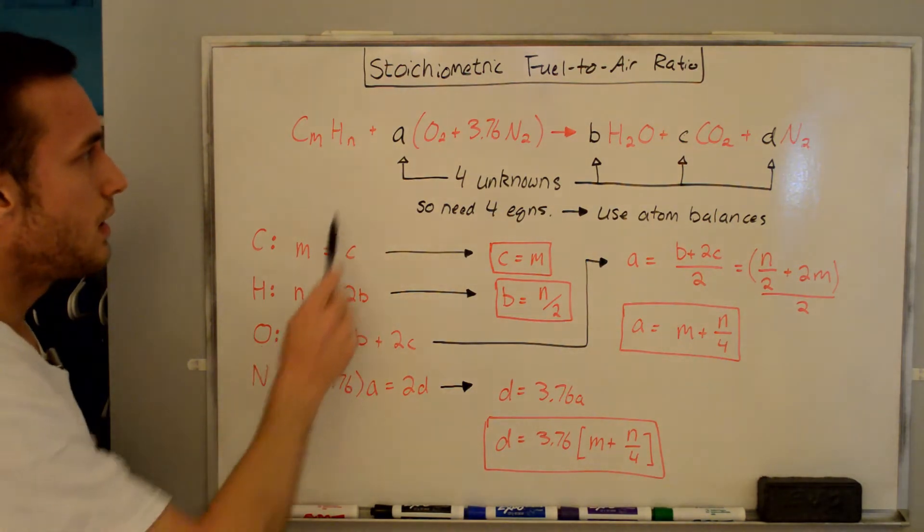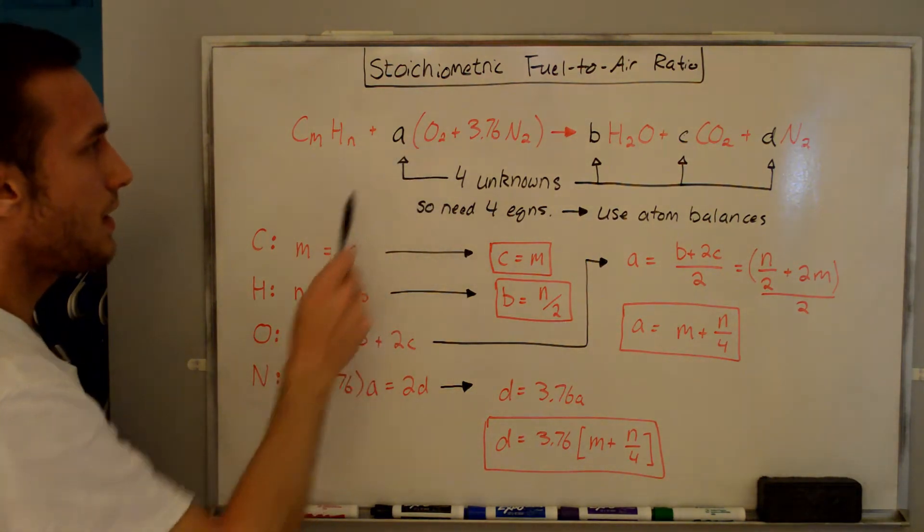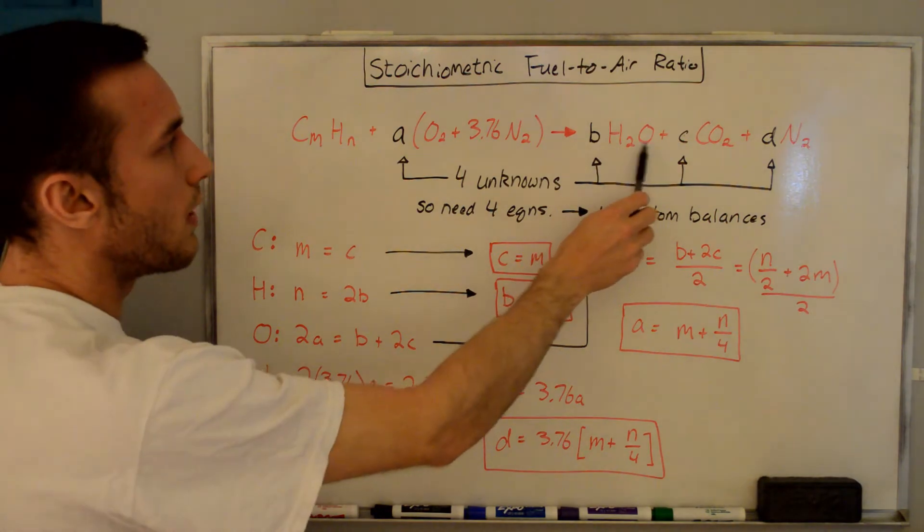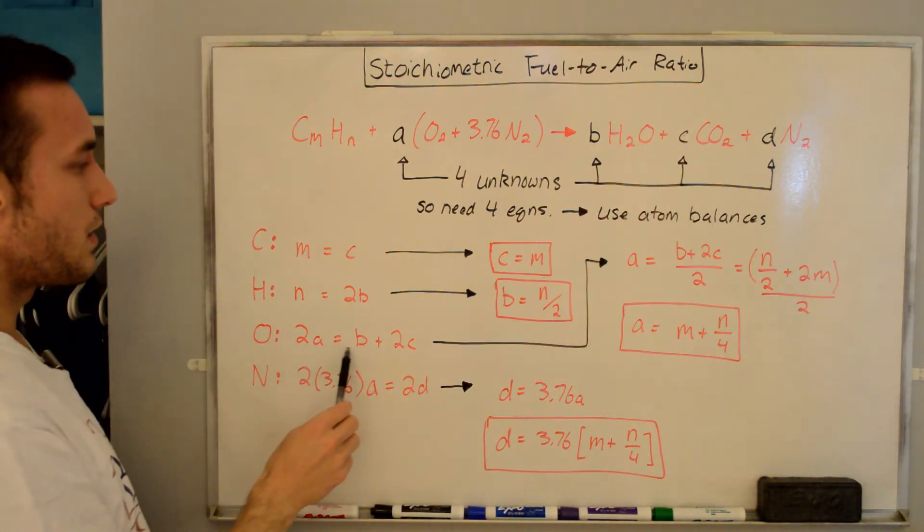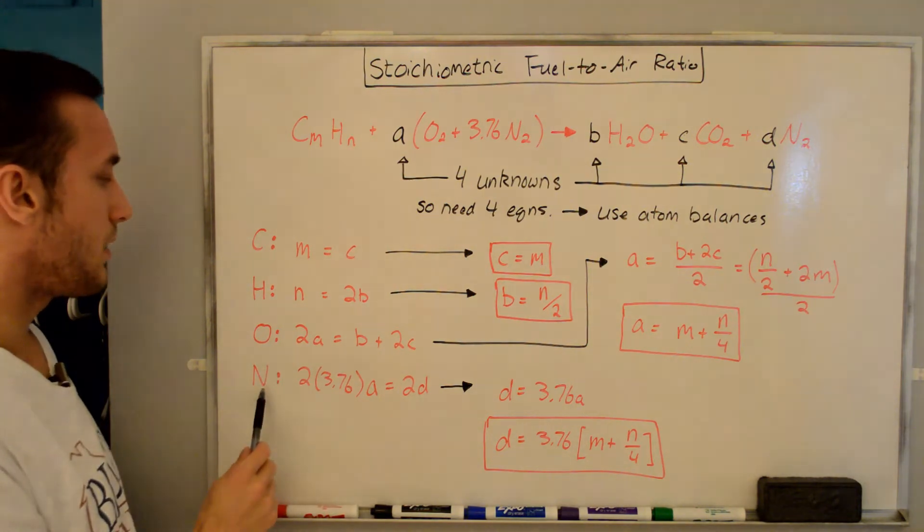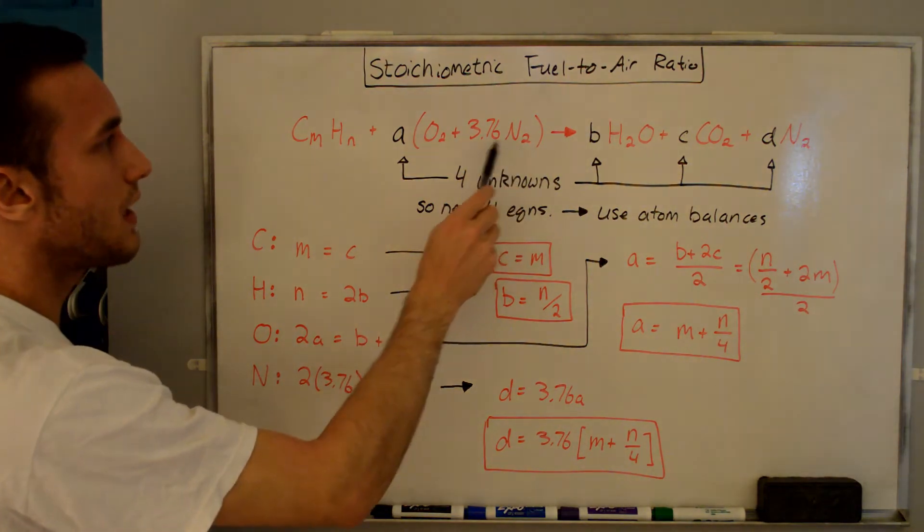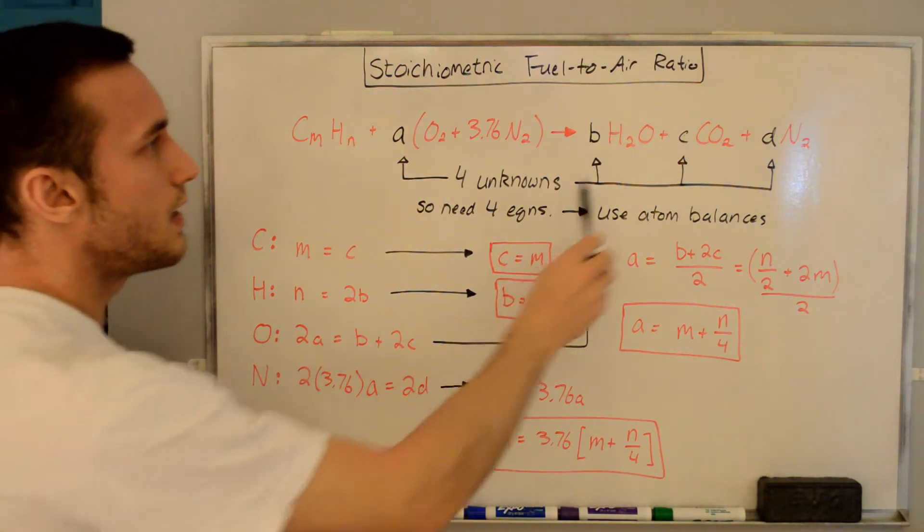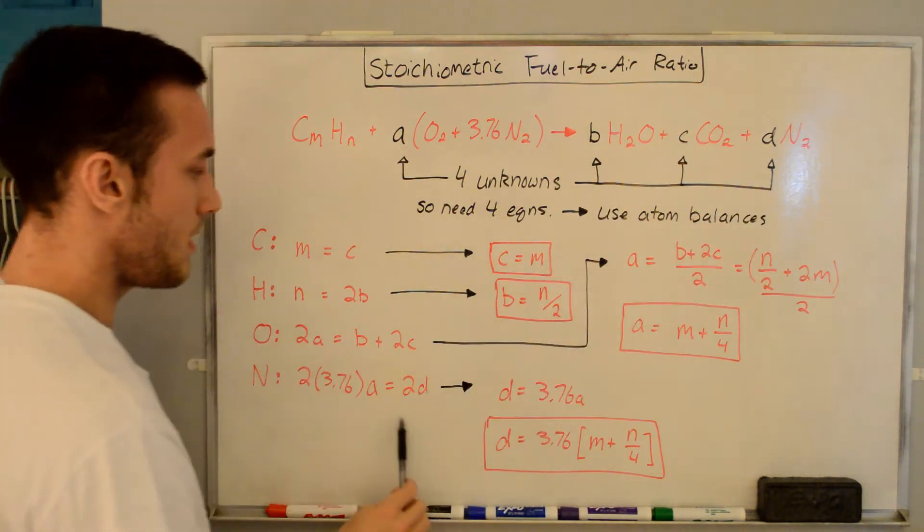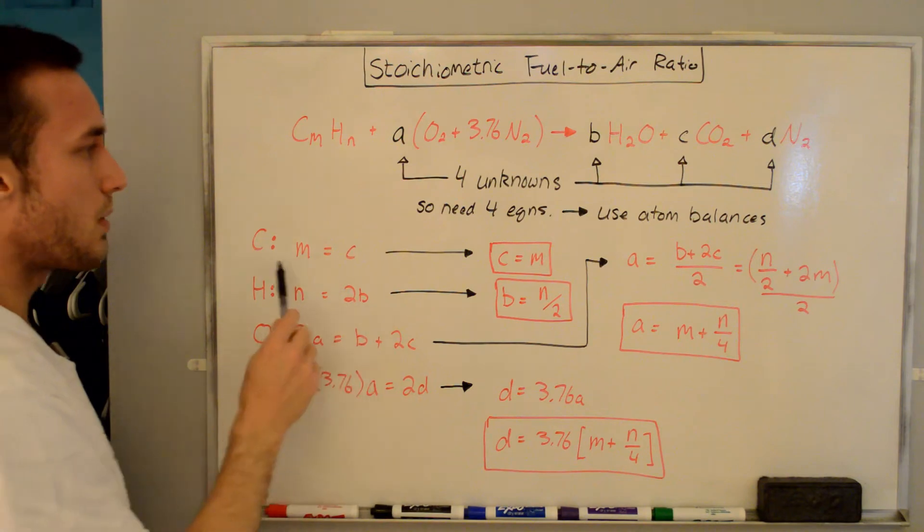If we go to oxygen, here we have 2 times A on the left-hand side, and then we have 1 times B plus 2 times C. So we have 2A is equal to B plus 2C. And finally, for nitrogen, we have 2 times 3.76 times A. That's this on the left-hand side. And then over here, just 2 times D is equal to 2 times D. And now we can simplify these down.